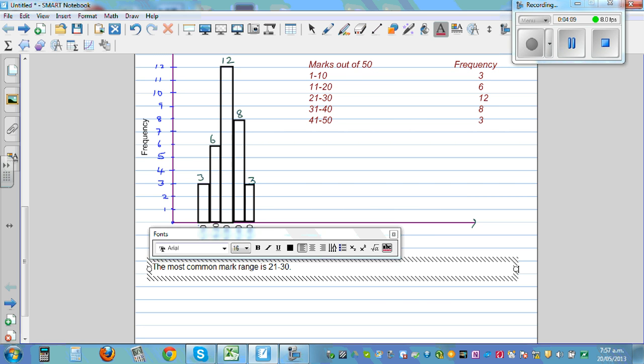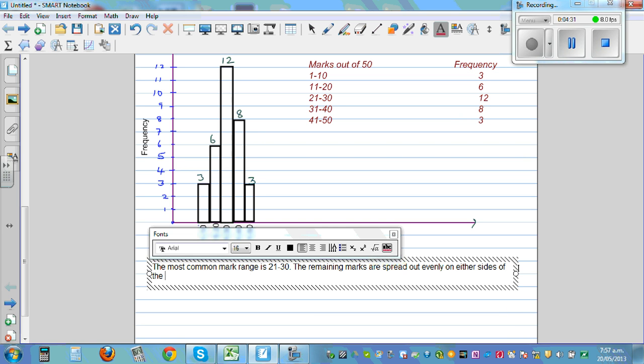The remaining marks are spread out evenly on either side of the range 21 to 30. So what does that mean?